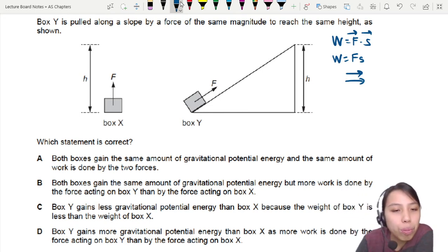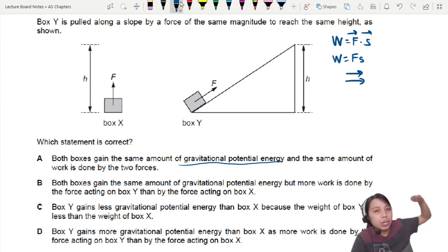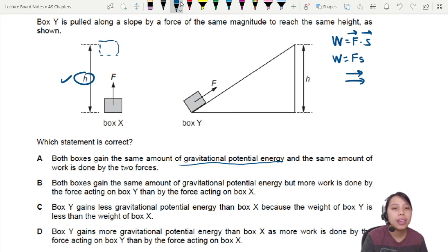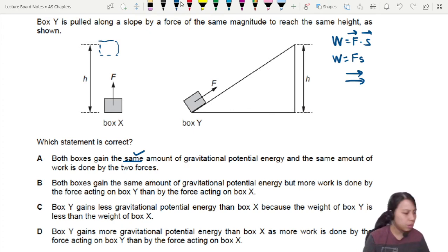So do both boxes gain the same amount of GPE? What is GPE again? GPE depends on how high you are above the ground surface. So in the first box, they went up to a certain height. The other box somehow not the same way but still goes up the same height. So yeah, they should be the same GPE. Same amount of work done by the two forces? I don't know about that. Let's pause and think a little bit more.